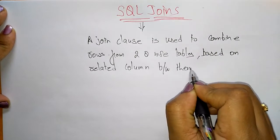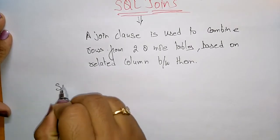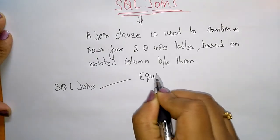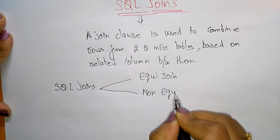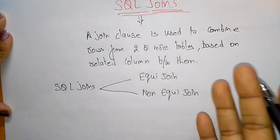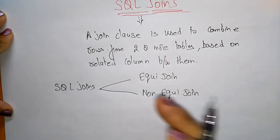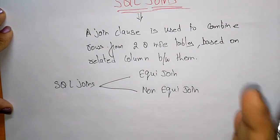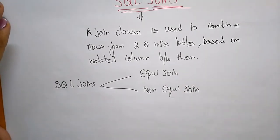SQL joins are classified into two types: equi join and non-equi join. Equi join means there is equality between two or more tables. Non-equi join means the tables are not equal — that is, when the condition is not an equality condition.